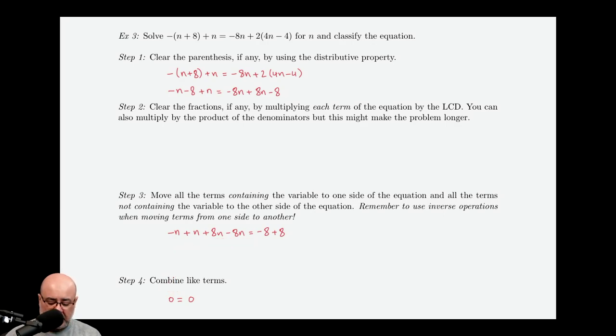And then a third time, negative 8 plus 8. Well, if you subtract something from itself, 8 minus 8 is just 0. So, that's also going to give us a 0 on the right-hand side.